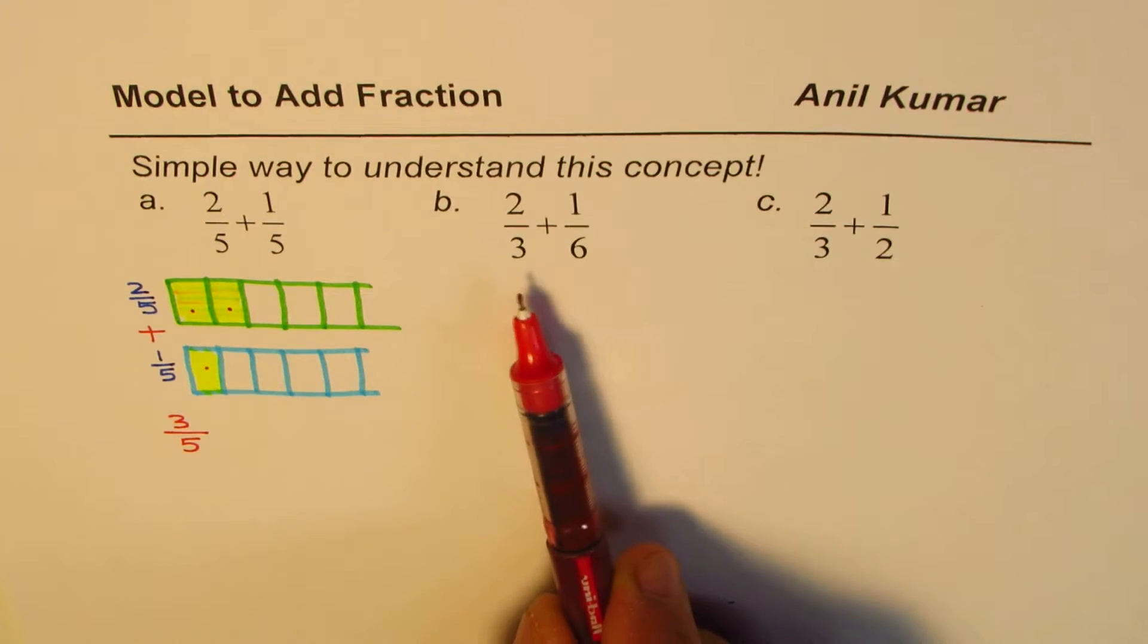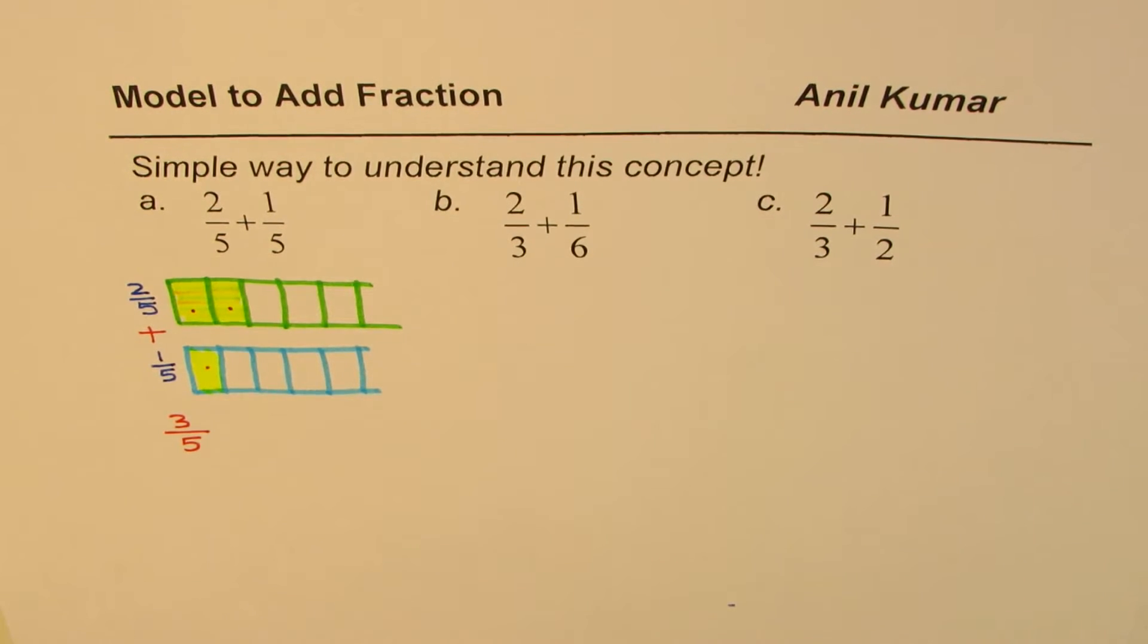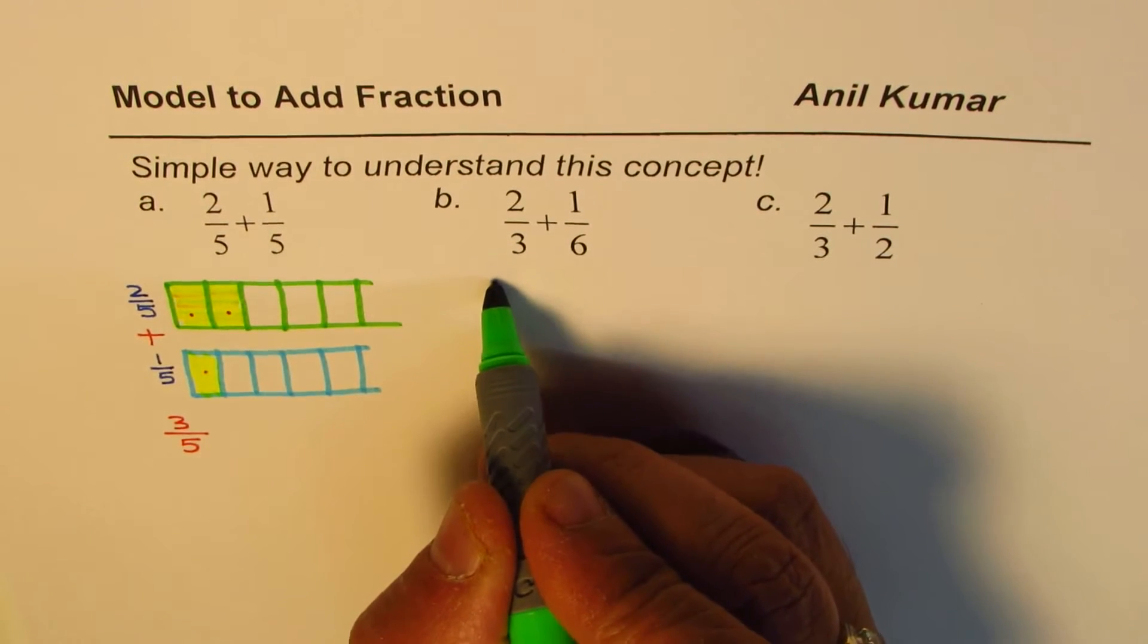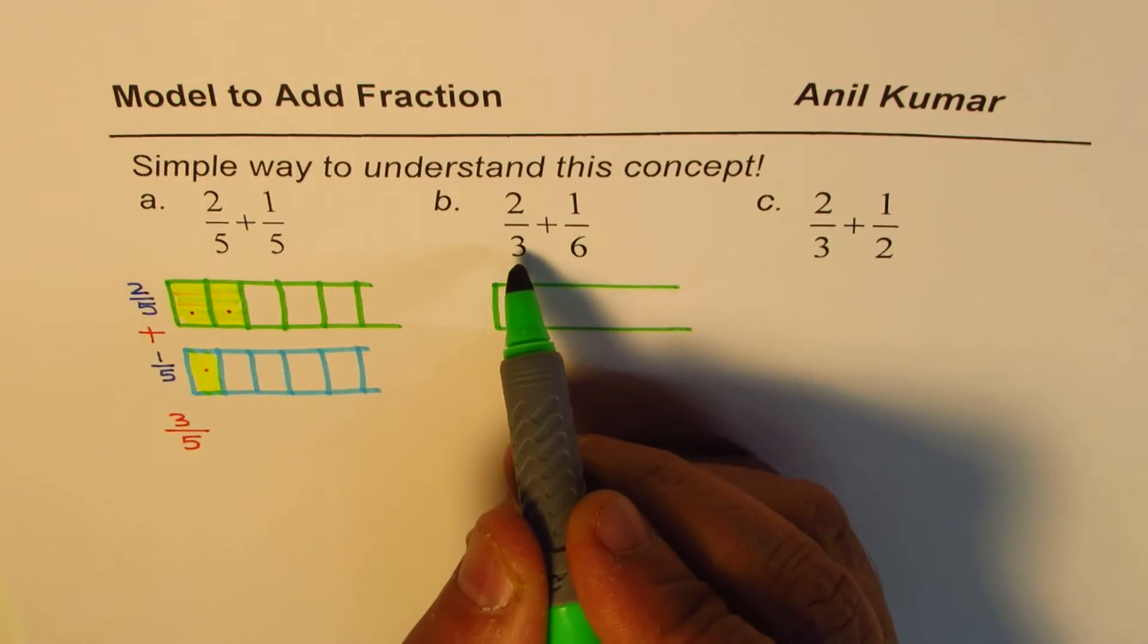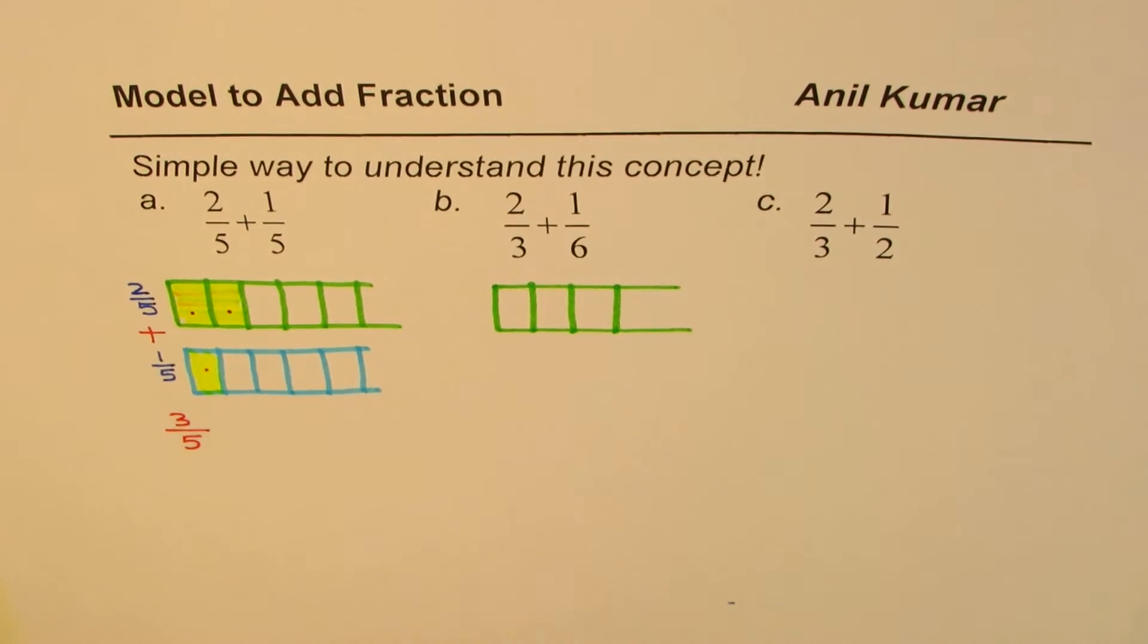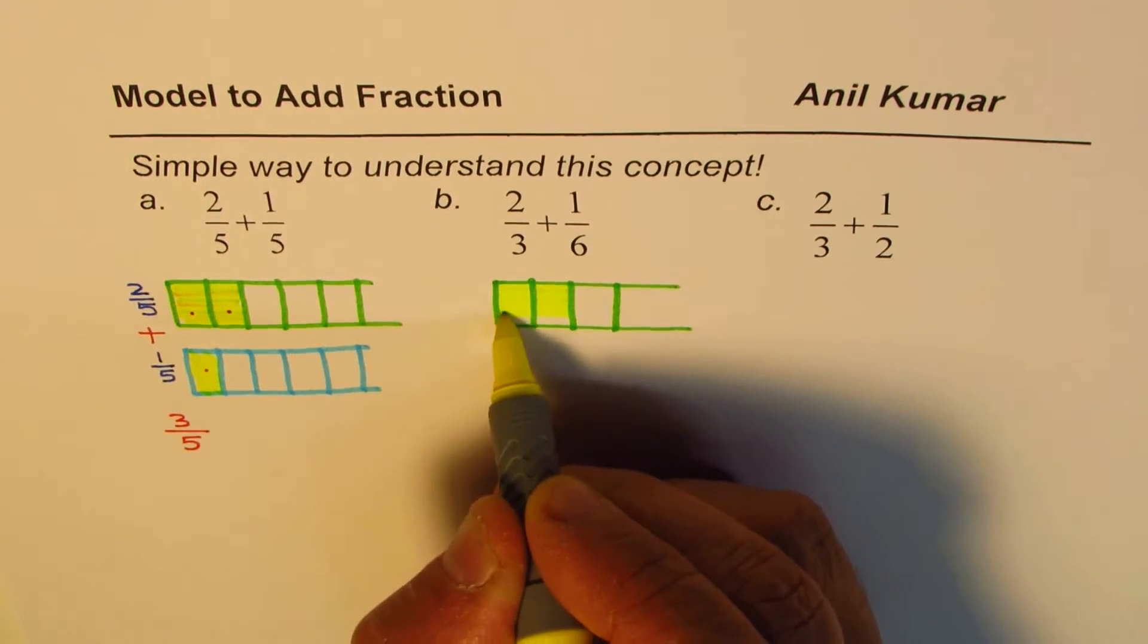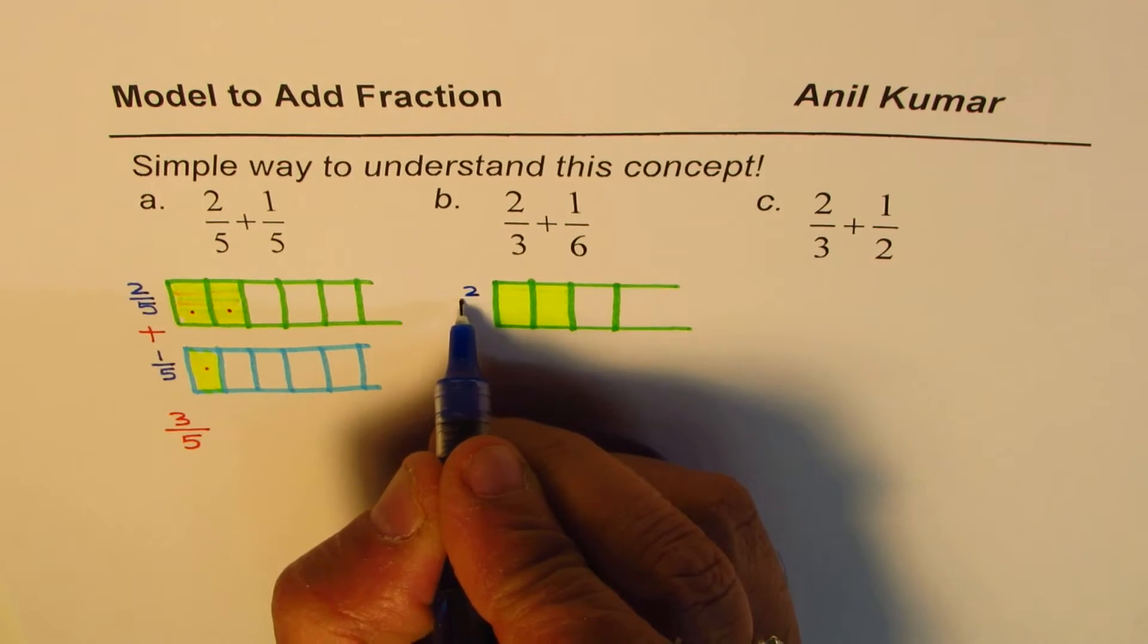How can we do the same thing with such examples? 2 over 3 plus 1 over 6. Well, let's try to do it. So let's consider another rectangle here. Let's start with a rectangle. Let's divide it into 3 parts. So it is 1, 2 and 3. When I say 2 out of 3, that means I will take 2 out of these. So that is 2 out of 3. Each is 1 third.